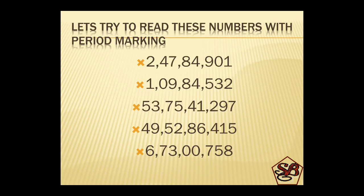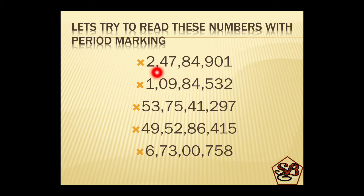Let's try to read these numbers again with the marking of periods. The first period is marked after three digits — ones, tens, hundreds — then a comma. Thousands, ten thousands — comma. Lakh, ten lakh — comma. And crores. So the number is starting from crores: two crore, 47 lakh, 84 thousand, nine hundred and one. Next number: one crore, nine lakh, 84 thousand, five hundred and thirty two.